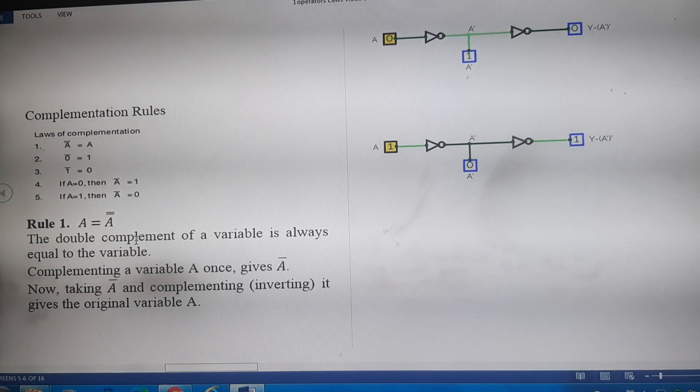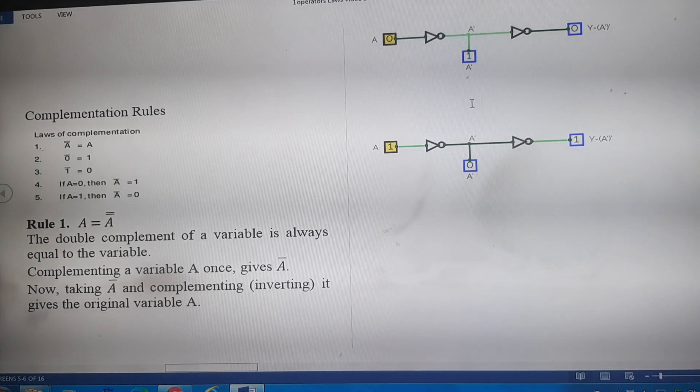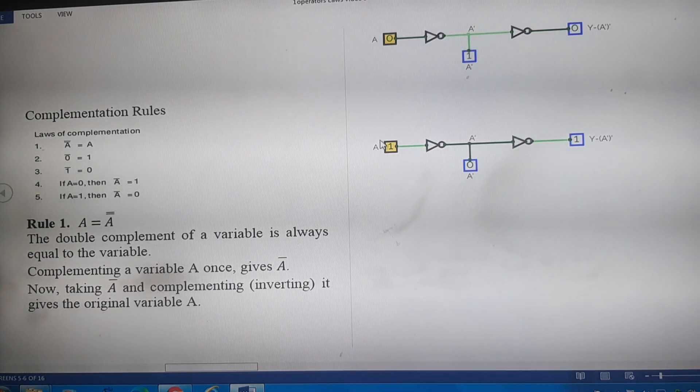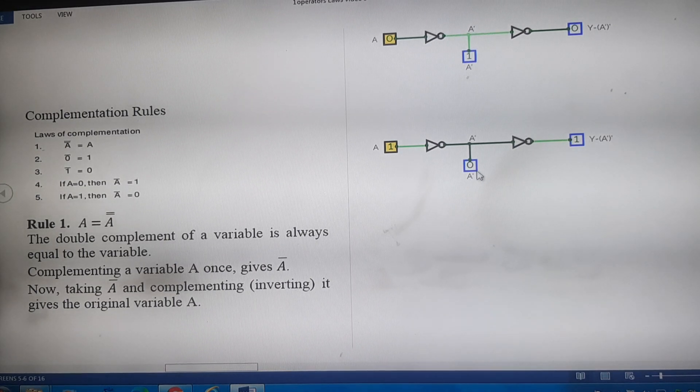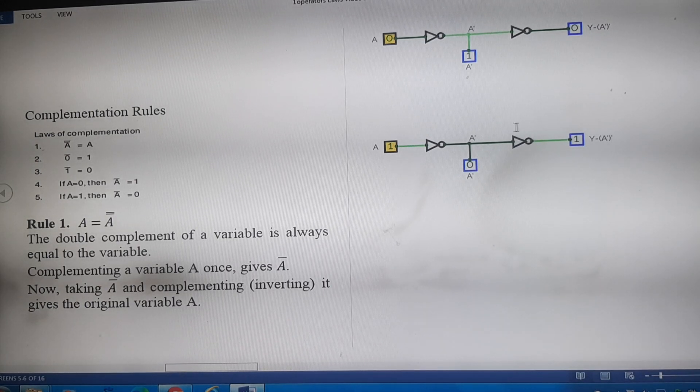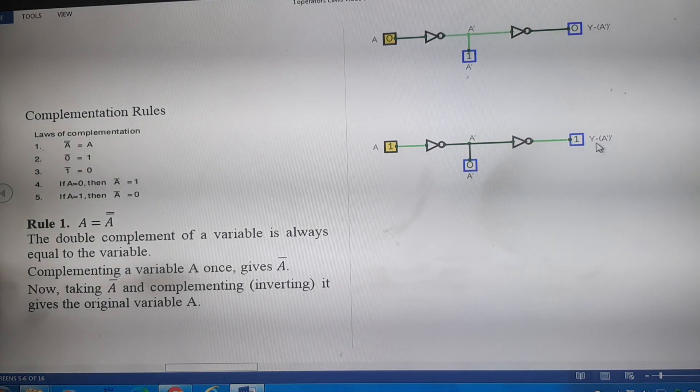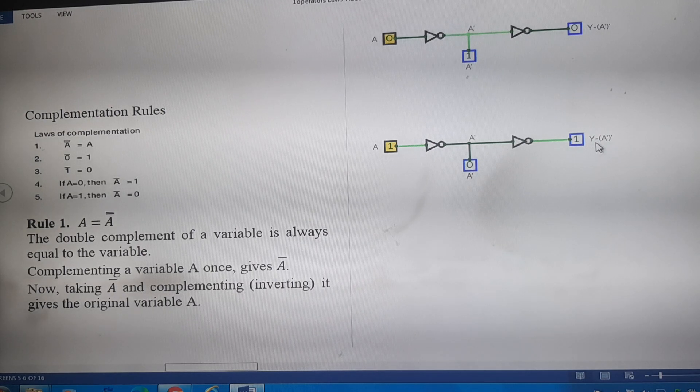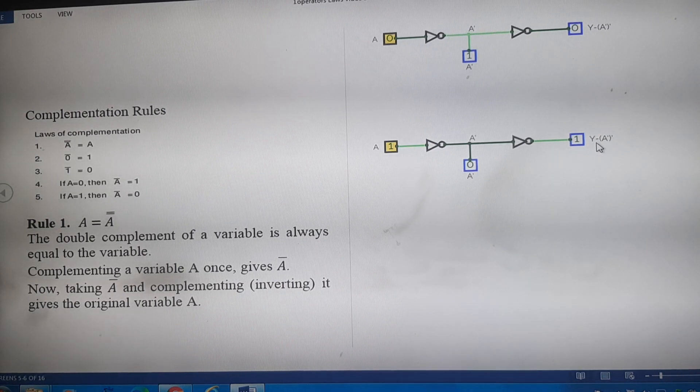We can see it in the second case where we have assumed that A is equal to 1. Its inverted output A' is equal to 0. And when we complement it again, then this output comes out to be equal to 1 which is equal to A.